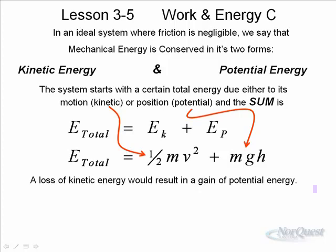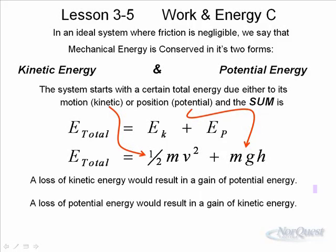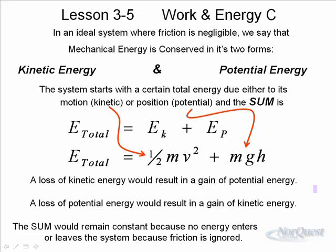Once you've gone through the equilibrium position at the bottom and you're starting to go up, you'll have energy at the bottom. As you rise, you gain height and therefore you gain potential. Where did that potential come from? You're also slowing down as you get higher and higher to the maximum height. At the maximum height, you stop. That means you've got zero kinetic, but lots of potential. A loss of kinetic would result in a gain of potential and vice versa. A loss of potential would result in a gain of kinetic. The sum would remain constant because we assume with this swing set that no energy enters or leaves the system because friction is ignored.